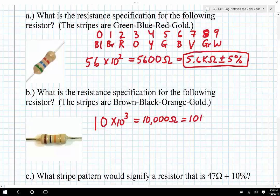Or as we prefer to put it, 10 kiloohms. And then because the last stripe is gold, it's once again plus or minus 5%.